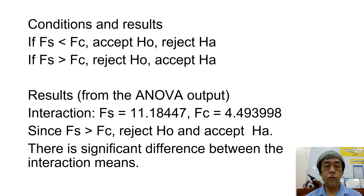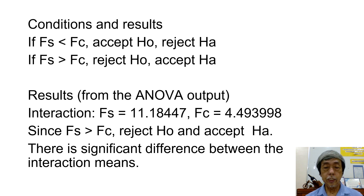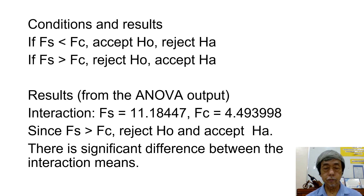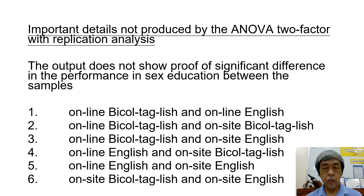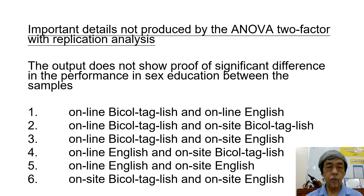For the interaction, the same conditions apply. The ANOVA output shows that F statistic is greater than F critical, so we reject the null hypothesis and accept the alternative hypothesis — there is significant difference between the interaction means. The analysis of variance two-factor with replication answered letter A.